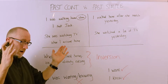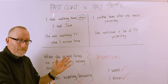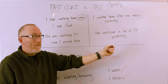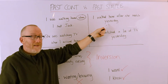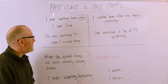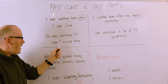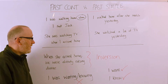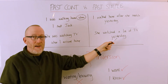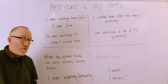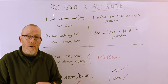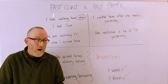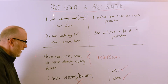Compare that to the simple past: 'I walked home after the match yesterday.' Notice with the past simple we have a time marker — 'yesterday.' Another example: 'She was watching TV when I arrived home' — past continuous, then past simple — compared to 'She watched a lot of TV yesterday.' The past continuous and past simple are used very commonly together to sequence events.